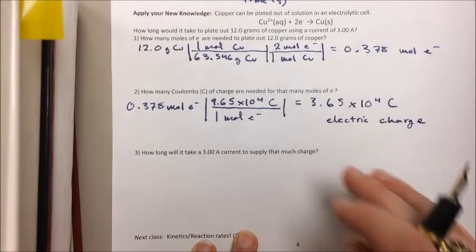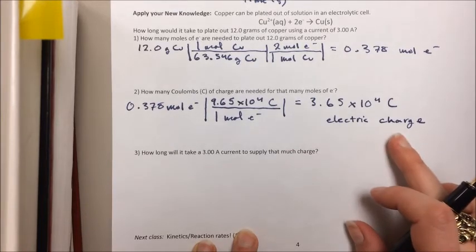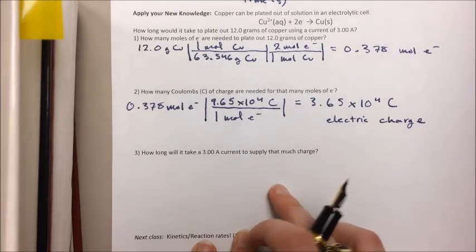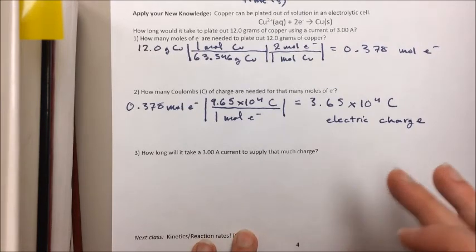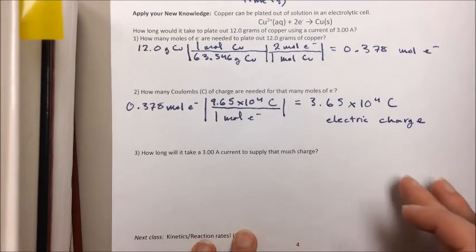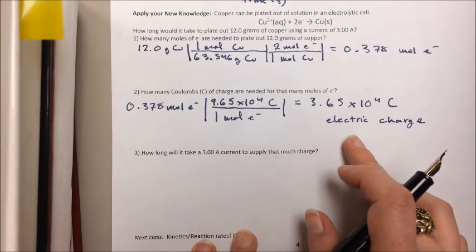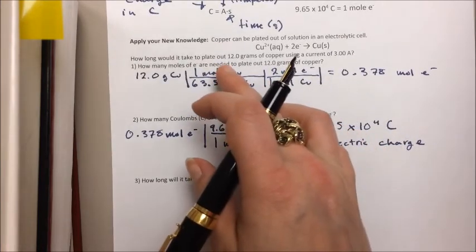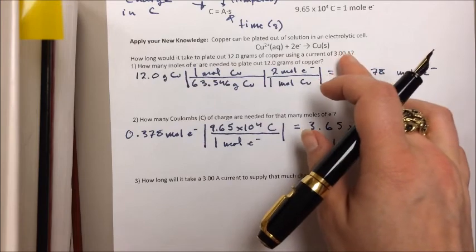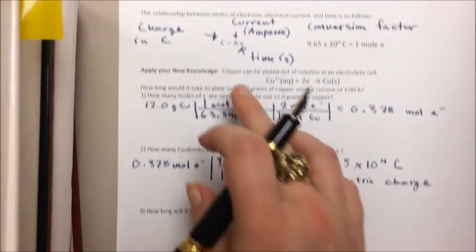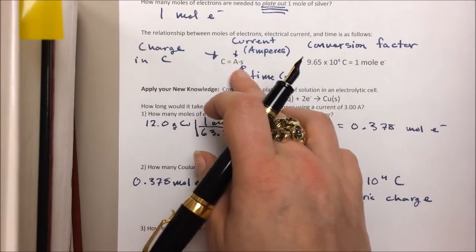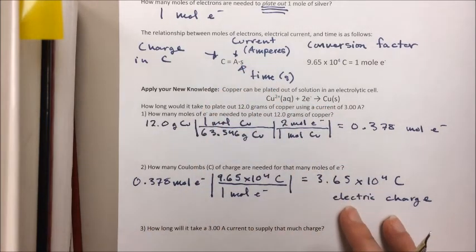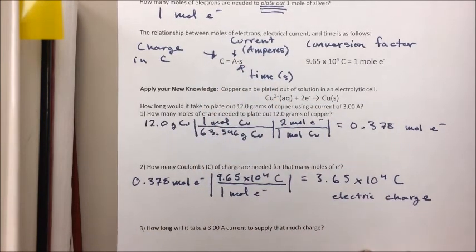Now, that charge is delivered by the current. So this is just like filling up a jug at the faucet. We need to know how long the faucet needs to run to give us all of the water we need. So we're going to look at the current. The current we have is 3 amps. We're going to plug that into our C equals A times S. This will give us the time needed to deliver that amount of charge at that flow rate.